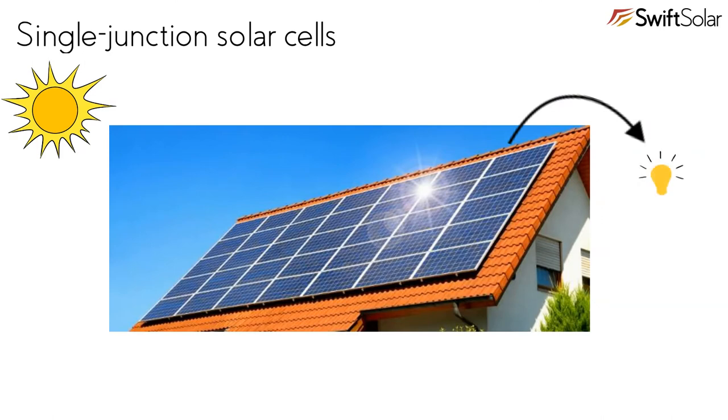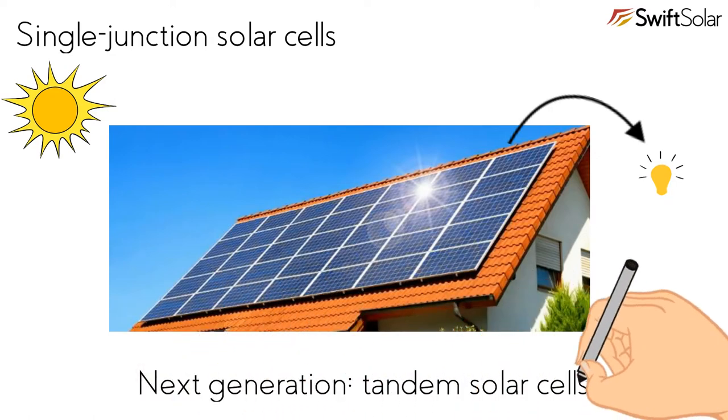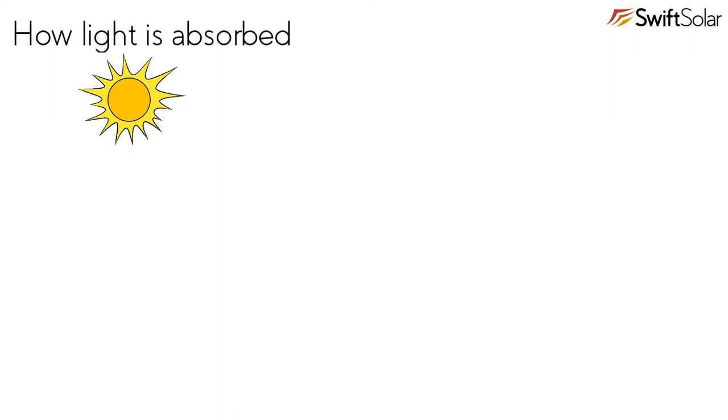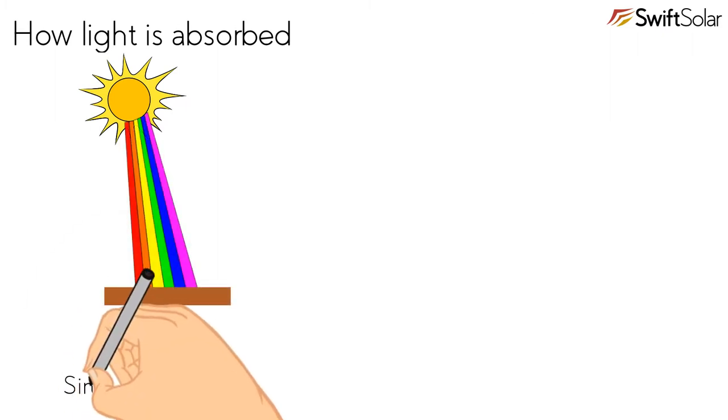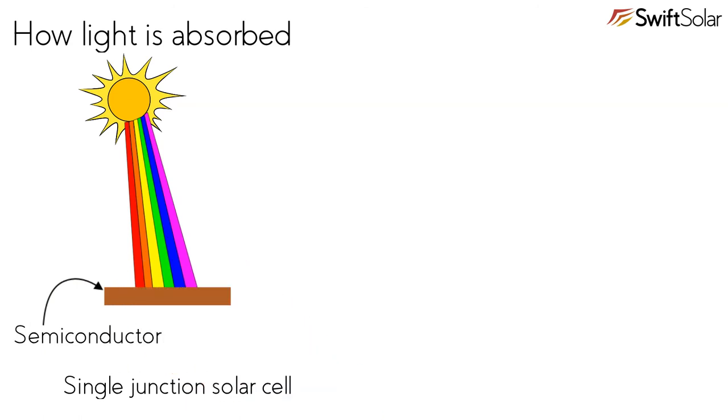Tandem solar cells get past these limits to produce more power per unit area. These are likely the future of solar energy harvesting. A single junction solar cell has a single semiconductor material that absorbs light.